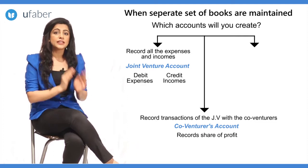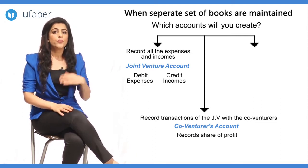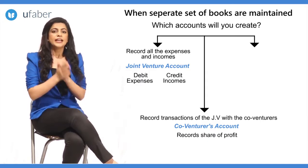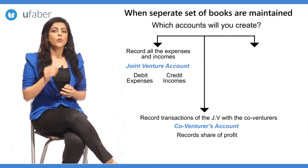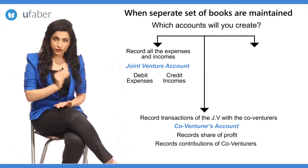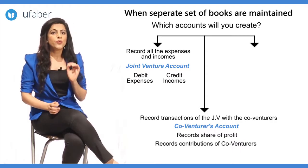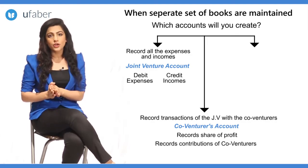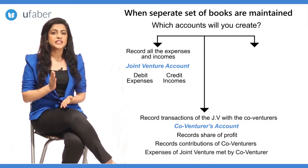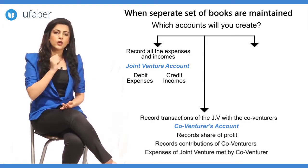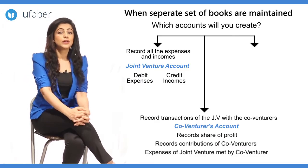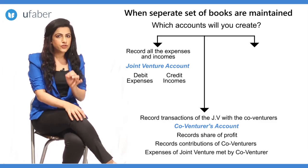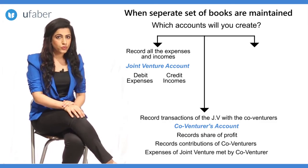Where do we transfer other goods or amounts brought in or taken out by the co-venturer? The co-venturers' account also records the amount of cash or goods brought in or withdrawn by the co-venturer. It also records joint venture expenditure met directly by the co-venturer. All that is brought in and taken out is recorded in the co-venturers' account.